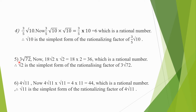Fifth question: 3√72. When we factorize, we get 18√2. So we have to multiply with √2 so that 18√2 into √2 is equal to 18 into 2, which is equal to 36, which is a rational number. Therefore √2 is the simplest form of rationalizing factor of 3√72.